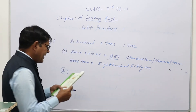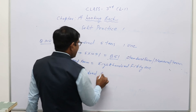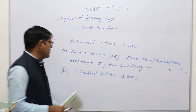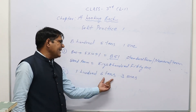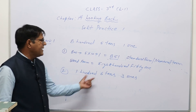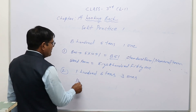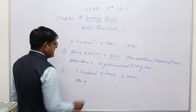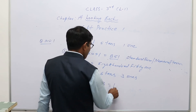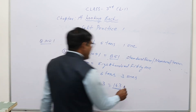The second question is: 1 hundred, 6 tens, and 3 ones. We have to write this first in standard form, then in word form. So 1 hundred means 100, plus 6 tens means 6 × 10 = 60, plus 3 ones means 3. So it equals 163. This is the standard form or numeral form.